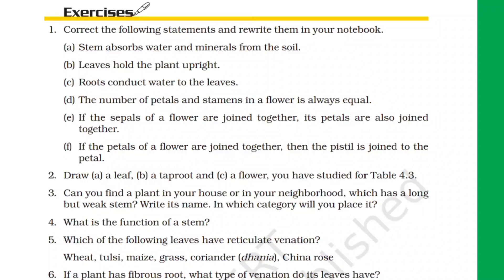Question F: if the petals of a flower are joined together, the pistil is joined to the petal. The corrected answer is: if the petals of a flower are joined together, the pistil is not joined to the petal. It is not necessary that it is joined to the petal.